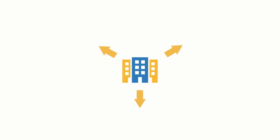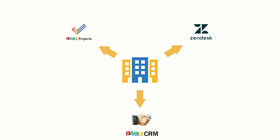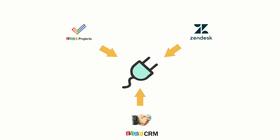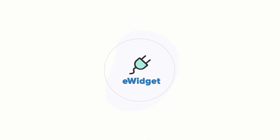We understand that most organizations use multiple services to run their business, like project management software, ticketing tools, or a CRM. Wouldn't it be better if you could access all those tools from your email and maybe even send data from your email content to them? The obvious answer was yes, it would be awesome. That's why we created the extension widget, which allows you to integrate other applications with Zoho Mail and exchange data. For the sake of convenience, I'm going to be calling the extension widget as eWidget from now on.